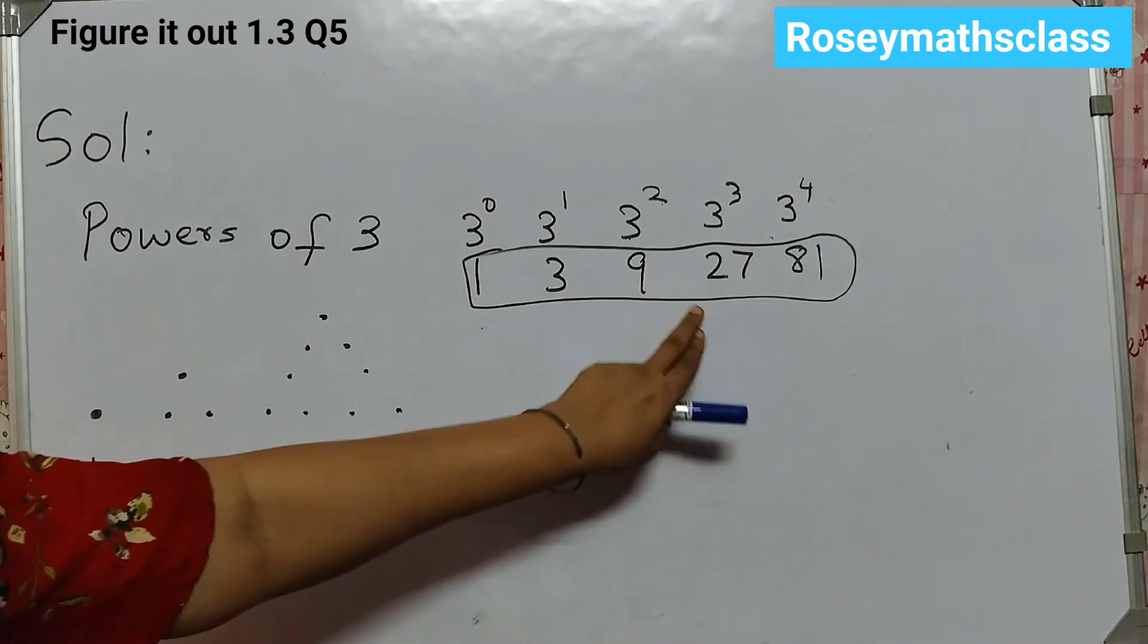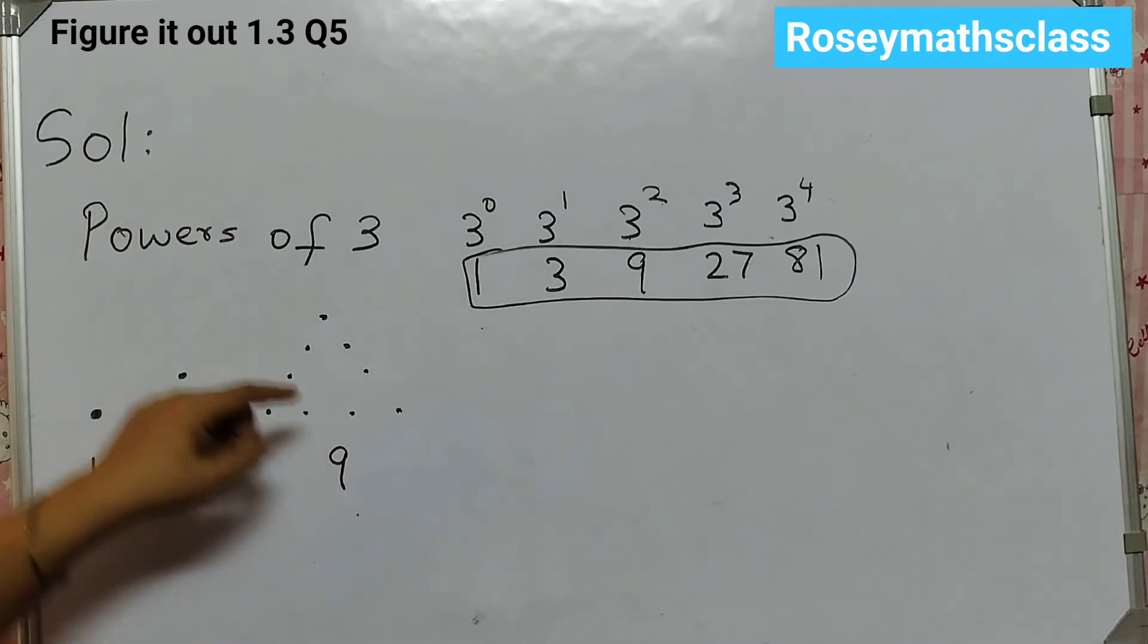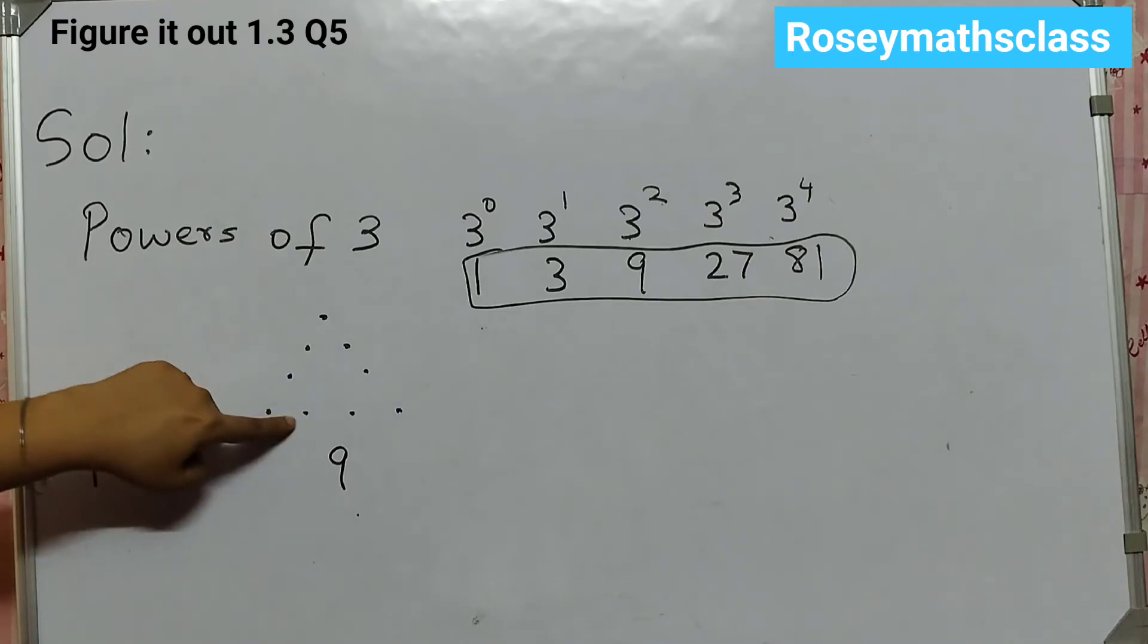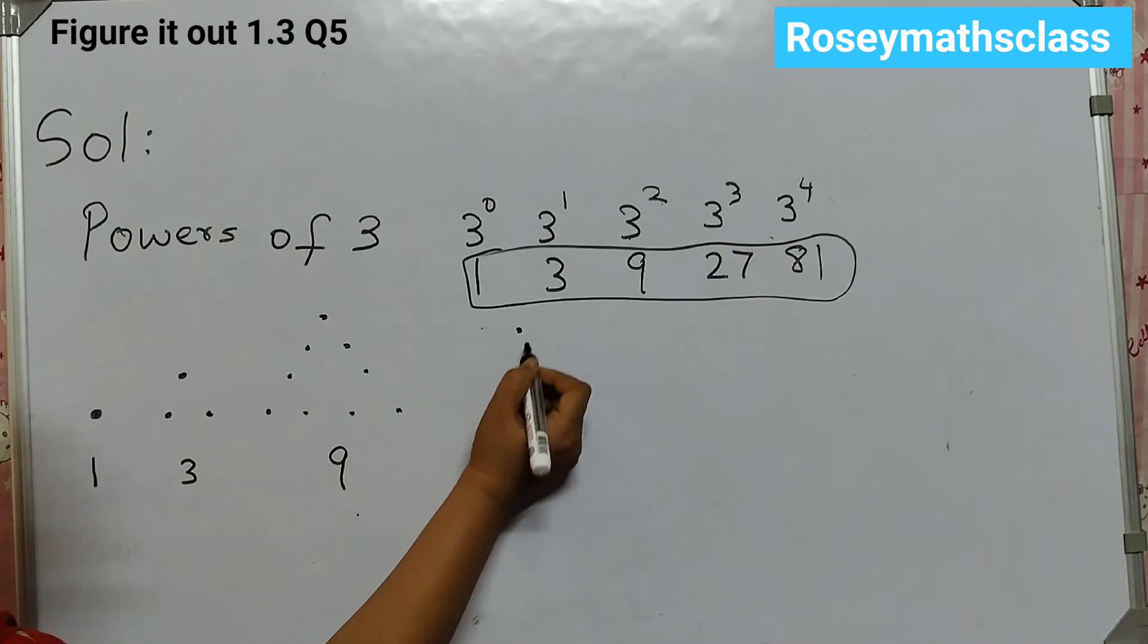Next is 27. So for 27, draw this whole thing. And then you make 3 copies of this. See 1, 2, 3, 4, 5, 6, 7, 8, 9. Now the same thing you will draw, but 3 times.